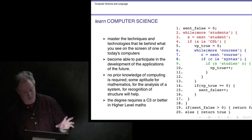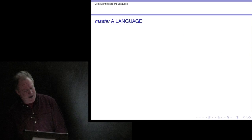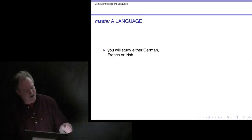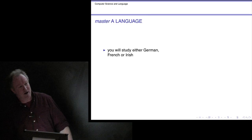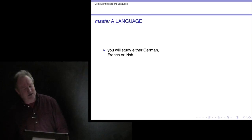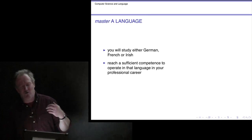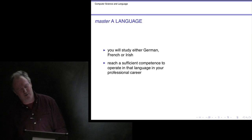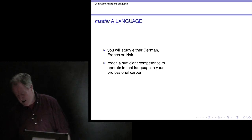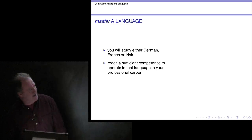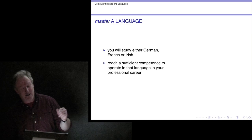Another component is mastering a particular language, which will either be German, French, or Irish. Those are provided by the relevant departments within Trinity College, and you'll be having courses alongside students from those other programs. We're aiming to give you a very high level of competence in that language — certainly high enough to be able to use it professionally, to actually make a career using it. Some people go on to do that, for example working in translation, though that needn't be the final destination of your career.